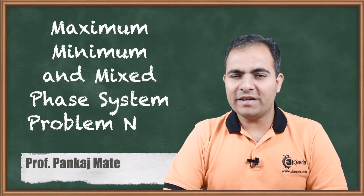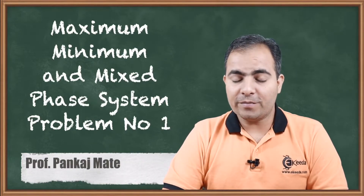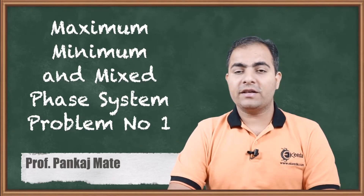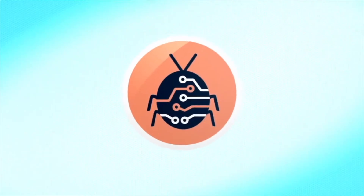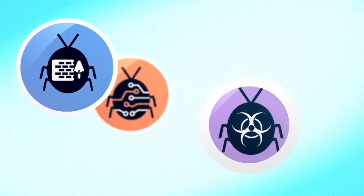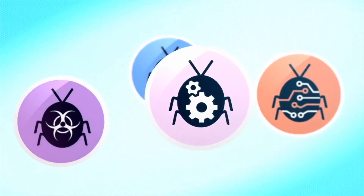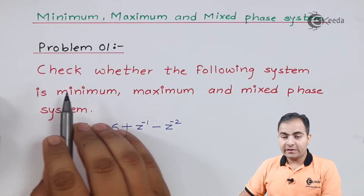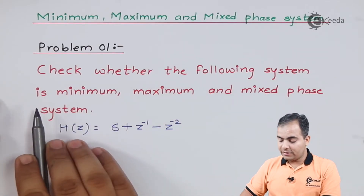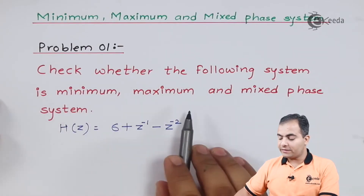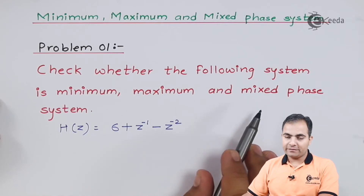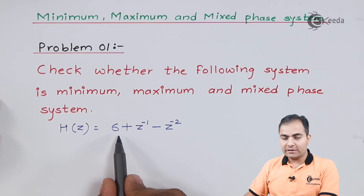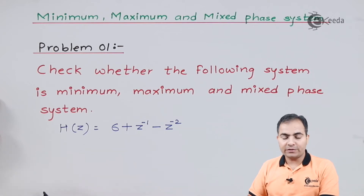Hello friends, today we are going to study a new topic — problem number one — which is based on minimum phase, maximum phase, and mixed phase systems. Check whether the following system is minimum phase, mixed phase, or maximum phase, where the function is given as H = 6 + z⁻¹ - z⁻².